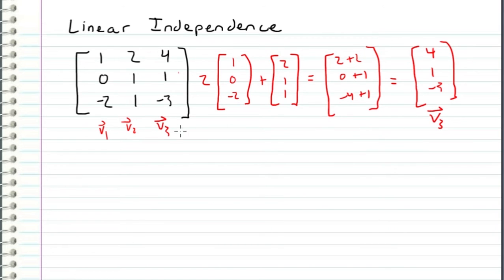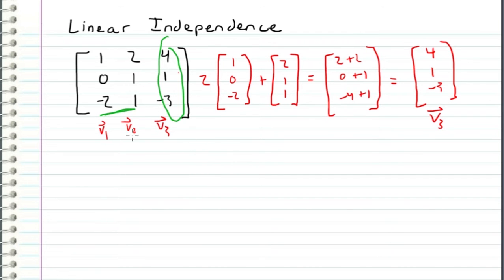So we can say that vector v3 can be written as a combination of vectors v1 and v2. Therefore, this set {v1, v2, v3} is linearly dependent — they are not linearly independent because we can write one of the vectors as a combination of the others.